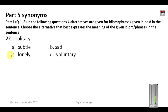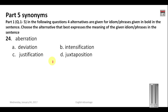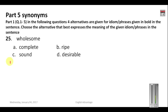Question 22: 'Solitary' — if you are solitary you are lonely, so your answer is C: lonely. 'Citadel' is a kind of fort or fortress. Question 23: 'Aberration' is a kind of deviation — not going directly toward your goal but going away from it. Question 24: 'Wholesome' — if something is wholesome it is very nutritious and good, so your answer is C: sound. Do not confuse it with competent, ripe, or desirable.